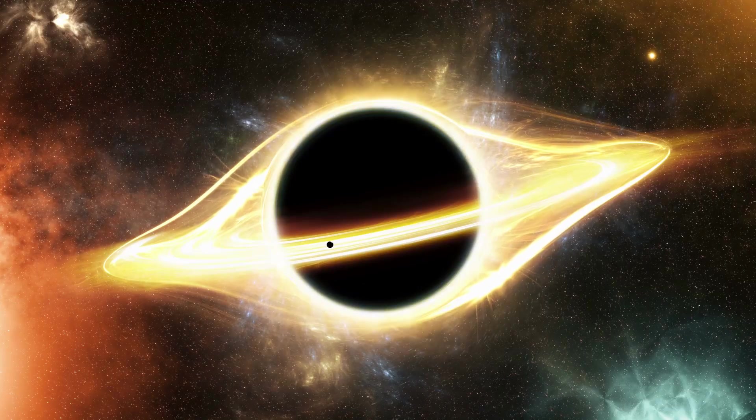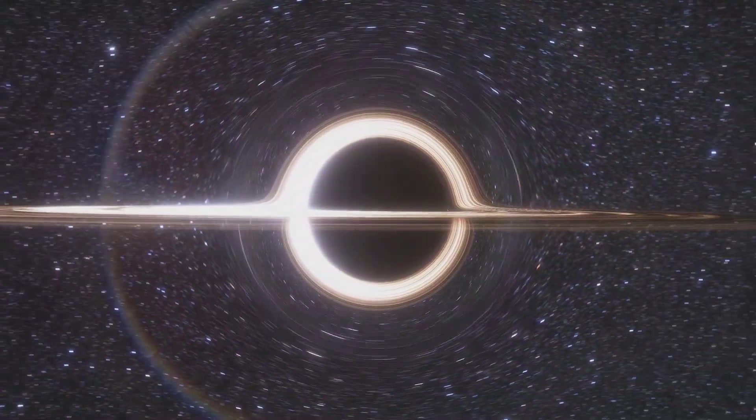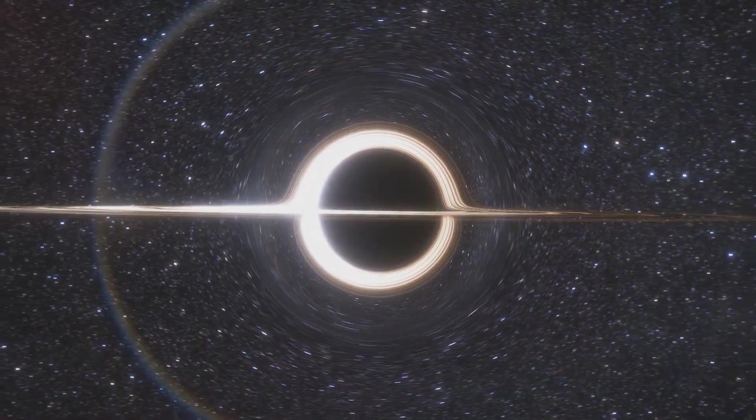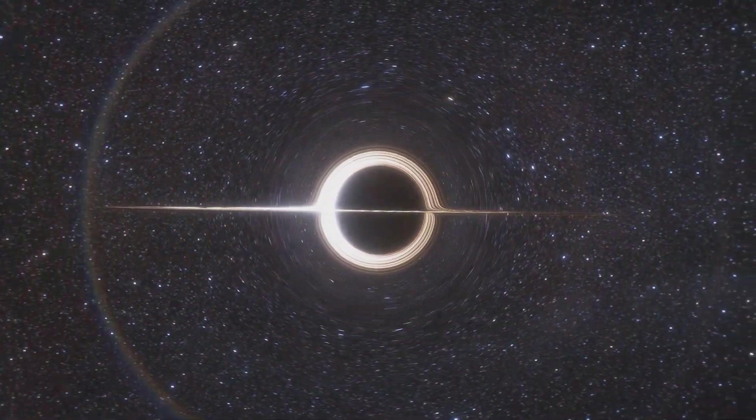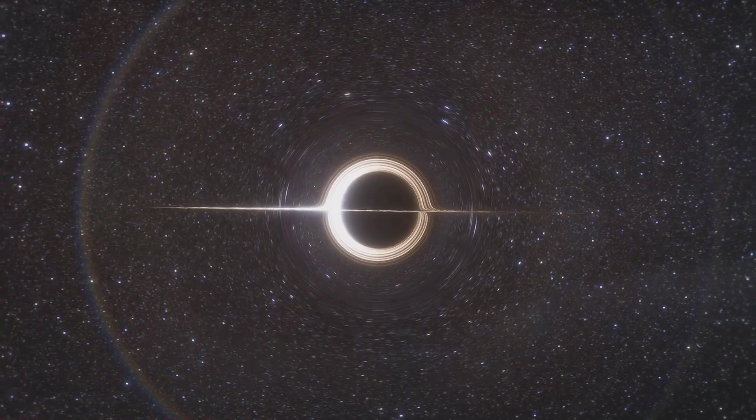But how does a black hole eat? It's not like it has a mouth. Well, black holes have something called an event horizon, a boundary beyond which nothing, not even light, can escape.